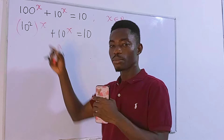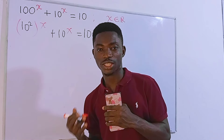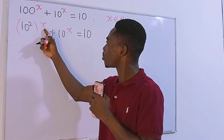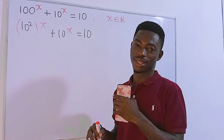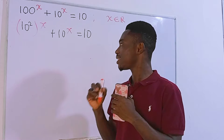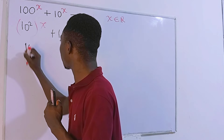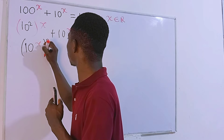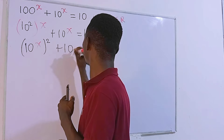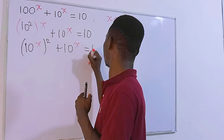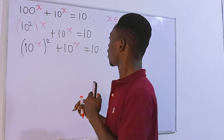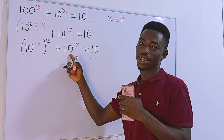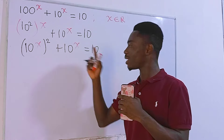We have a number to a power then to another power. If we interchange their positions, we get something nice: 10 to the power x, all to the power 2, plus 10 to the power x, equals 10. Now you realize that what is inside the parenthesis is the same expression repeated.